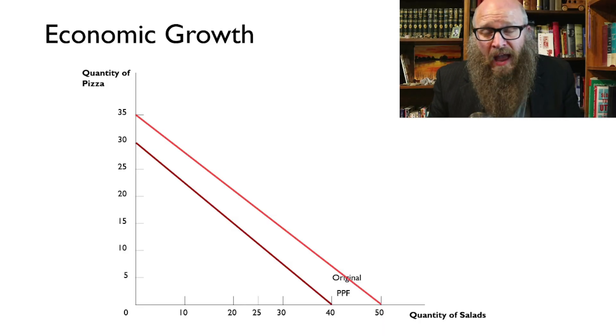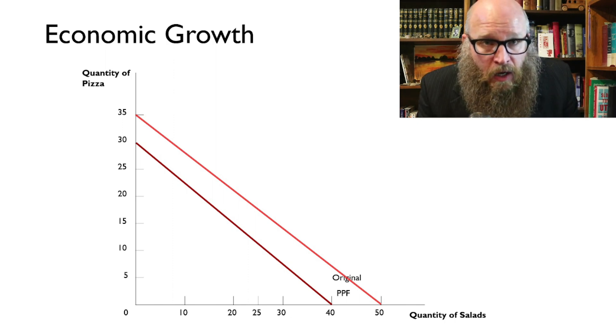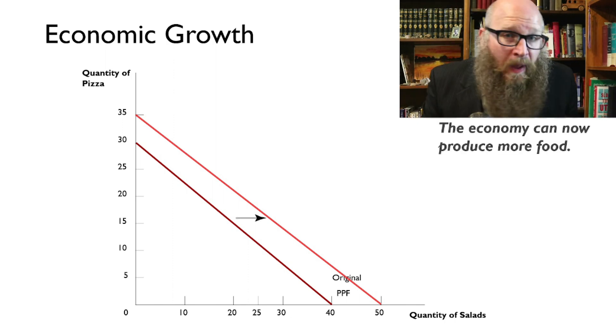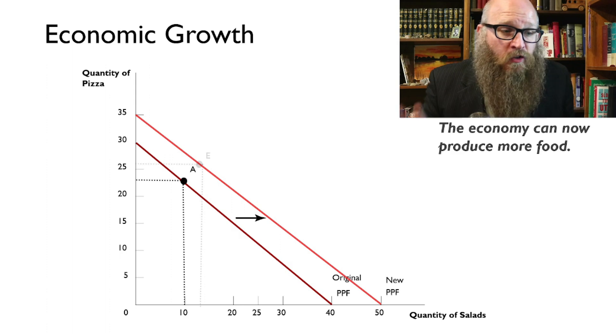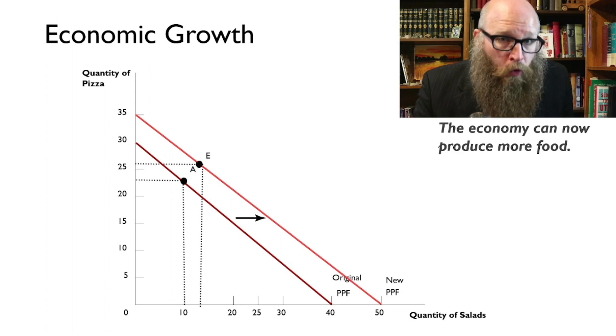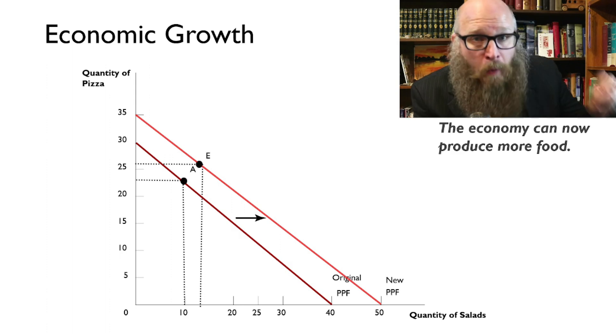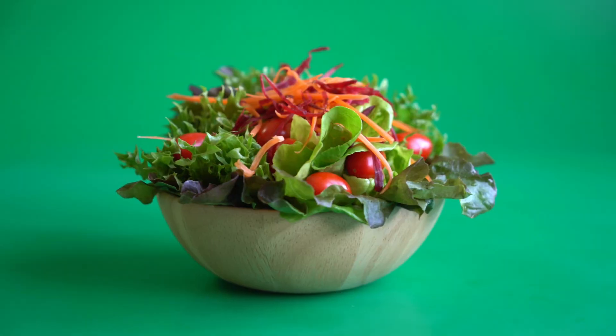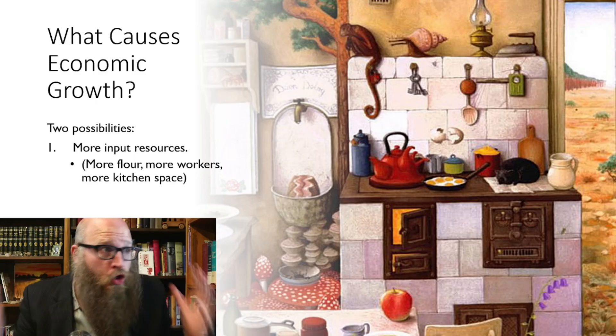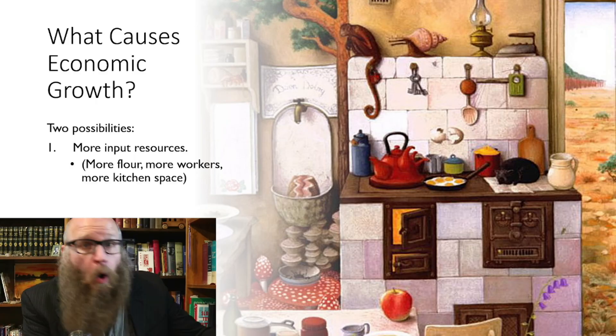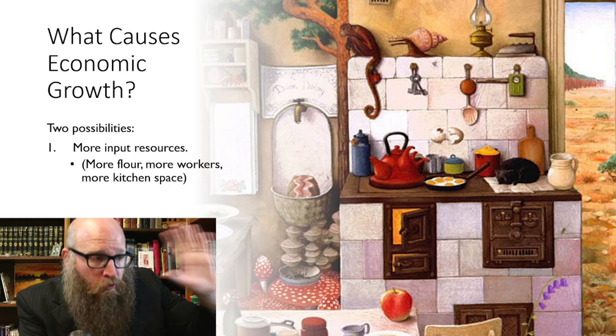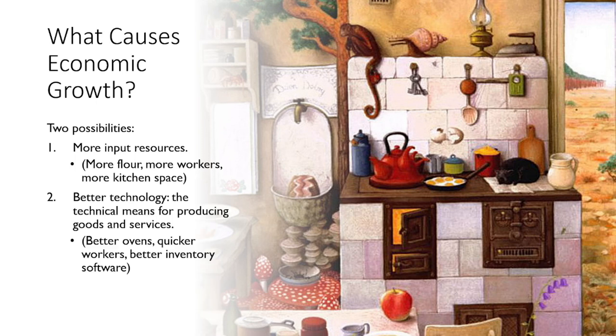To shift that curve out, we need to change something in the economy that's not on this axis. When we have more labor, when we have more kitchens, we can produce more food. We can move from point A to point E. More pizza, more salad. There are just two ways to grow your economy. More inputs. In this case, it's more flowers, more workers, more kitchen space, or better technology. Better ovens, quicker workers, better inventory software. And that's it. That's all there is to it on why some countries are rich and some countries are poor.